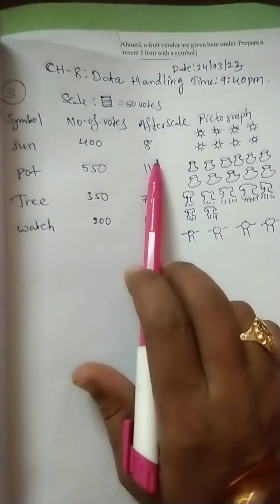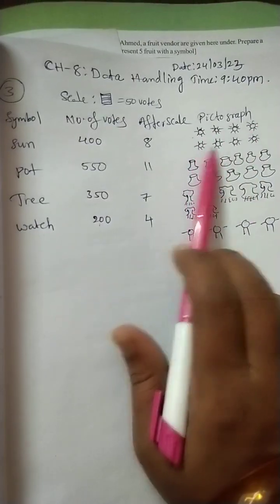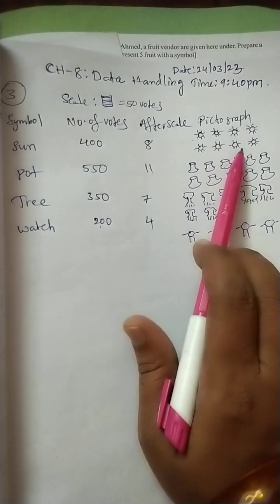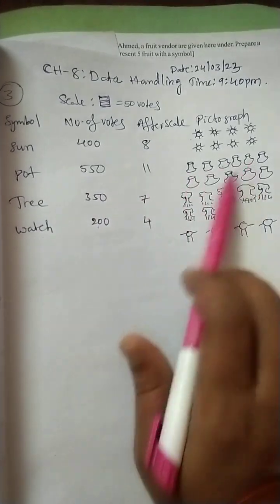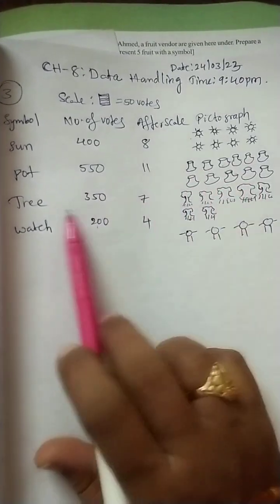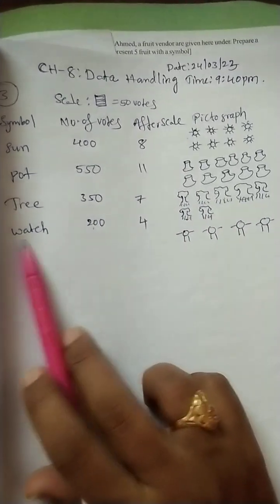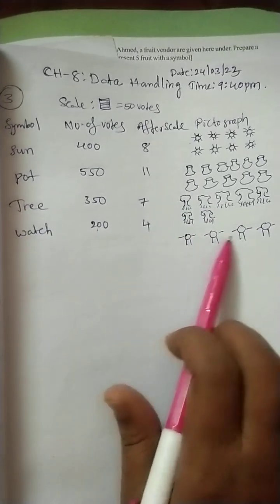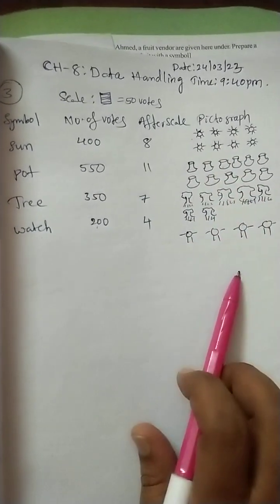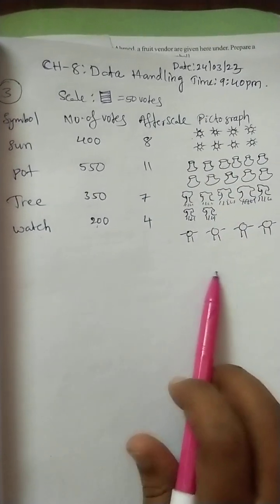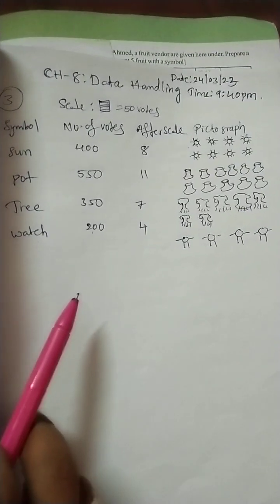After getting small numbers, then we will take pictographs for particular numbers. 8 sun votes are there after reducing, so 8 sun symbols. I took 4 plus 4, 8. Now, pot 11, 11 pots we can draw. Next tree, 7, 7 trees we can draw. Next watch, 4 watches symbols we can draw. This is a pictograph. After writing these pictographs, next we can answer the given questions.